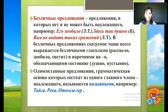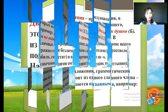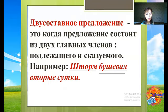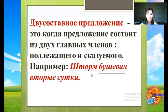Односоставные предложения, грамматическая основа которых состоит из одного главного члена – подлежащего, называются назывными. Например: «Тайга», «река», «откосы гор». Двусоставное предложение – это предложение, которое состоит из двух главных членов: подлежащего и сказуемого. Например: «Шторм бушевал вторые сутки». Здесь «шторм» – подлежащее, «бушевал» – сказуемое. В этом предложении два главных члена, поэтому оно является двусоставным.